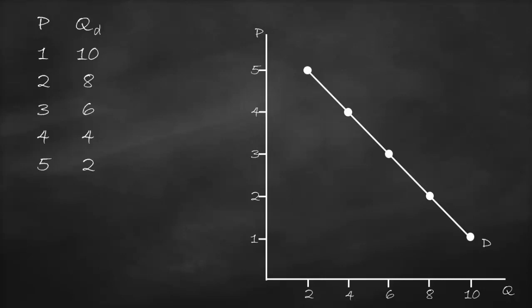This is an example about chocolate. We have the demand schedule, which shows different prices and different quantities demanded for chocolate, and this is the graph of the demand curve. At a price of 2, our quantity demanded is 8 from our demand schedule. On the graph, I go horizontally from a price of 2 until I intersect with the demand curve, then I go vertically to get a quantity demanded of 8.